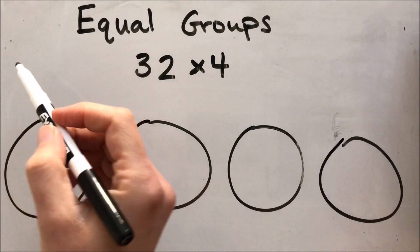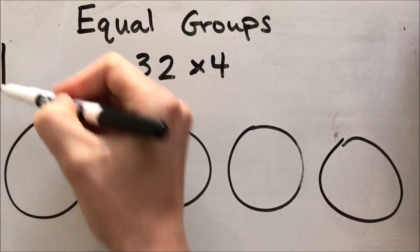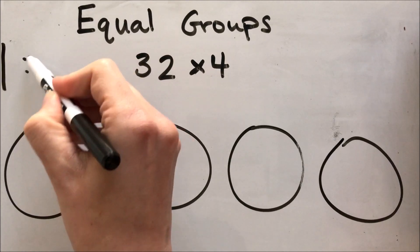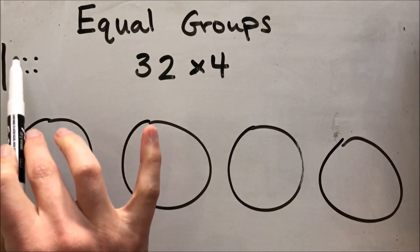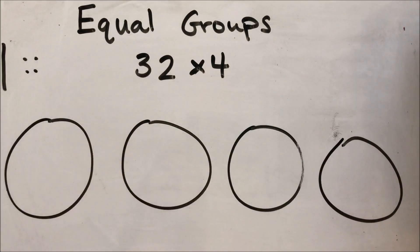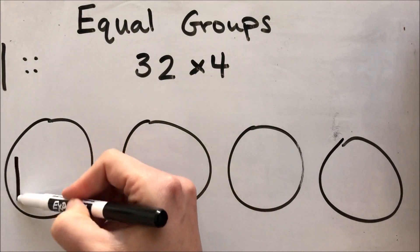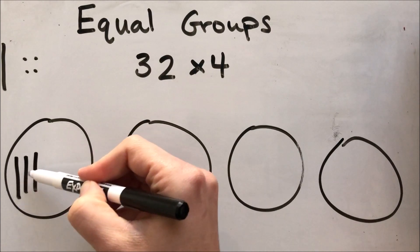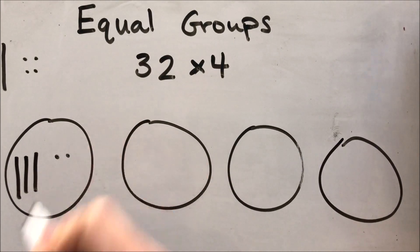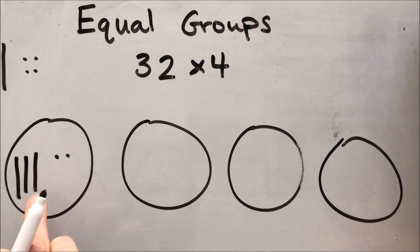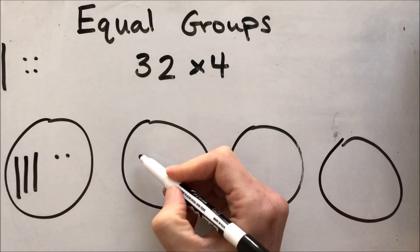I'm not going to draw 32 individual tallies in each one of these circles — otherwise it gets really messy, as you just saw. Instead, I'm going to use my place value blocks. This is a ten and these are ones. When I build 32, I need three tens — 10, 20, 30 — and two ones. I'm going to make sure I line them up nice and neat and put 32 in each one of these circles.